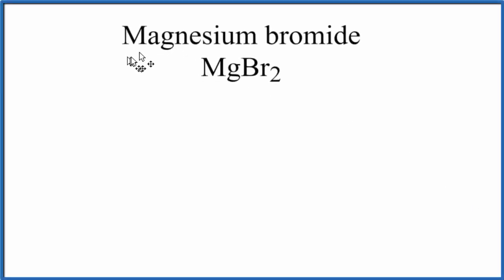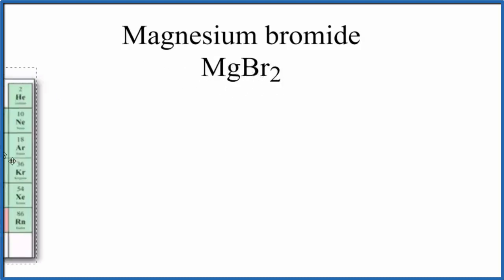In this video we'll look at whether magnesium bromide, that's MgBr2, forms ionic or covalent bonds. The easiest way to do that is figure out whether magnesium and bromine are metals or nonmetals.